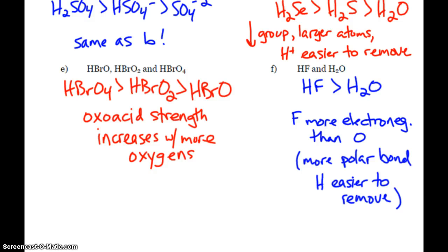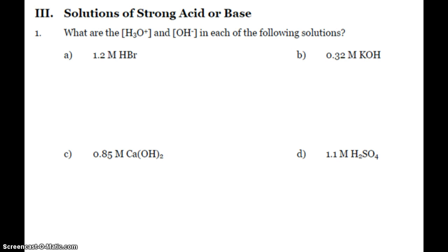HBrO4 is greater than HBrO2 is greater than HBrO. These are oxoacids. And in this situation, the strength increases with the more oxygens present. And lastly, this was in our notes. HF, hydrofluoric acid, is stronger than water. Obviously, fluorine, our most electronegative element, more electronegative than oxygen. So we've got the more polar bond. It's easier to ionize, get that hydrogen out of there.